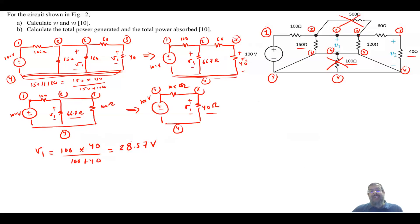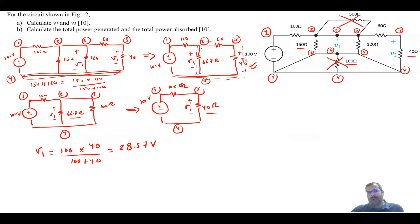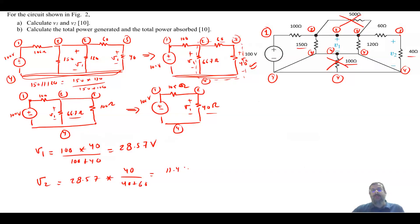Now I need to find V2, so I go backward. When going back to the previous circuit, V2 doesn't exist there, but the circuit before that does have V2. V1 is known — it equals 28.57 V — and V1 is connected in series with the 60 and 40 ohm resistors. So I can use voltage division: between node 2 and 4, I have 60 in series with 40. Therefore V2 equals V1 times 40, divided by 40 plus 60 — which gives 28.57 × 40 / 100 = 11.4 volt. I have now found V1 and V2.